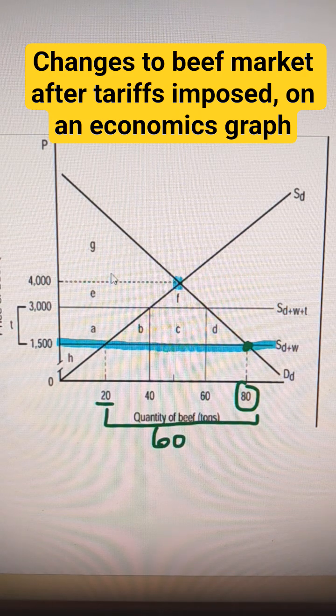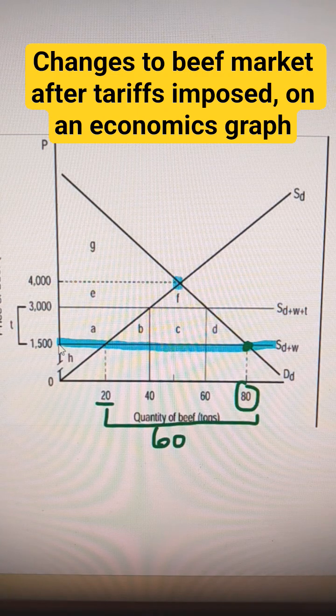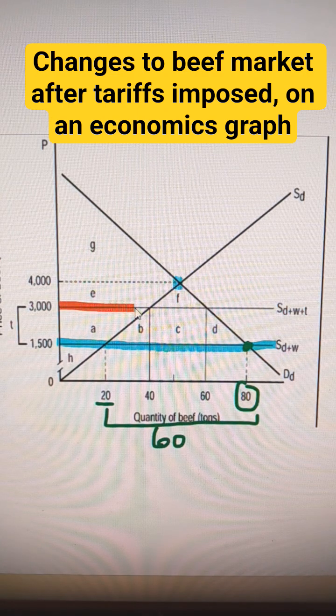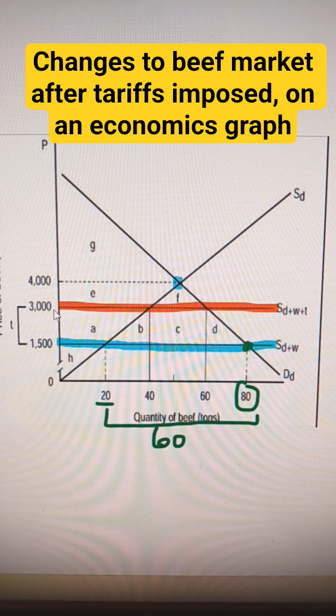Then government comes along, puts in a tariff, and so we're going to draw a new line on that tariff, which is world price plus the tariff. So it makes the price now for beef in this country $3,000.